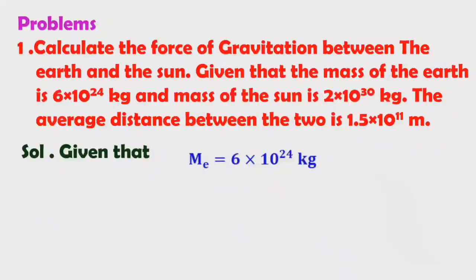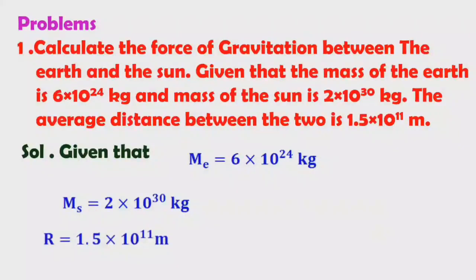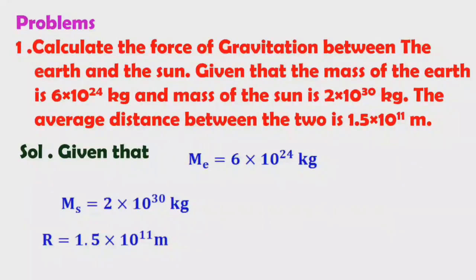Mass of the earth is 6 into 10 power 24 kilograms. Mass of the sun is 2 into 10 power 30 kilograms. The distance between earth and sun is 1.5 into 10 power 11 meters. You can represent this distance with D or R. The formula for gravitational force of attraction is F gravitational equals G M1 M2 by R square, where M1 is the mass of the sun and M2 is the mass of the earth.